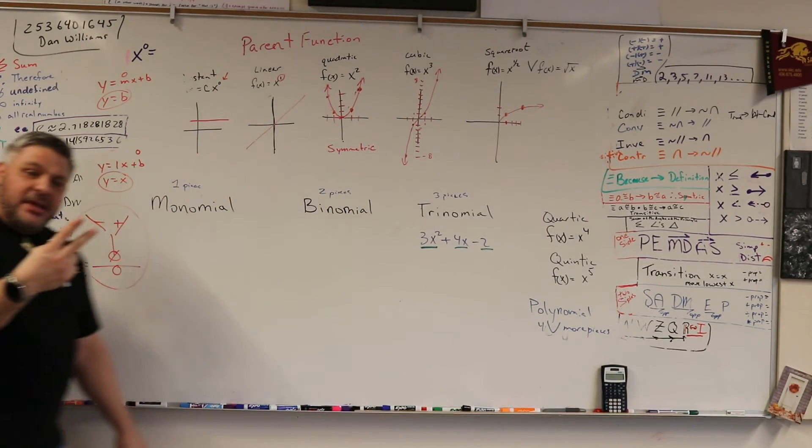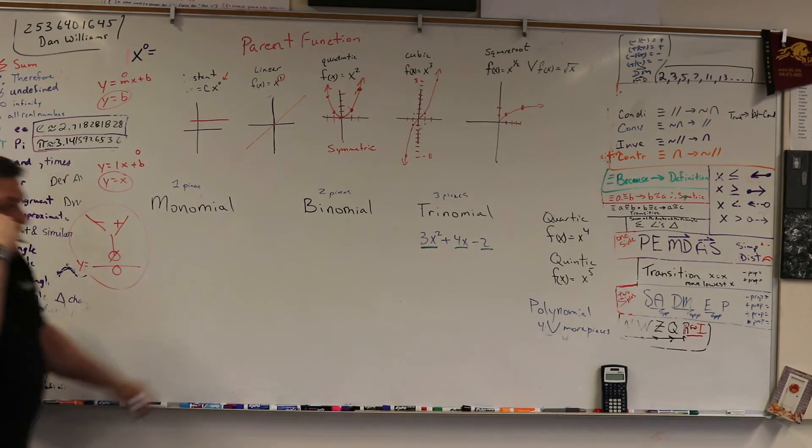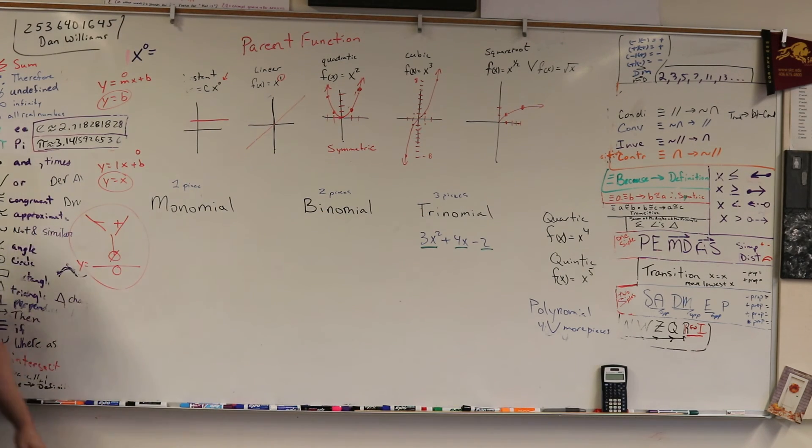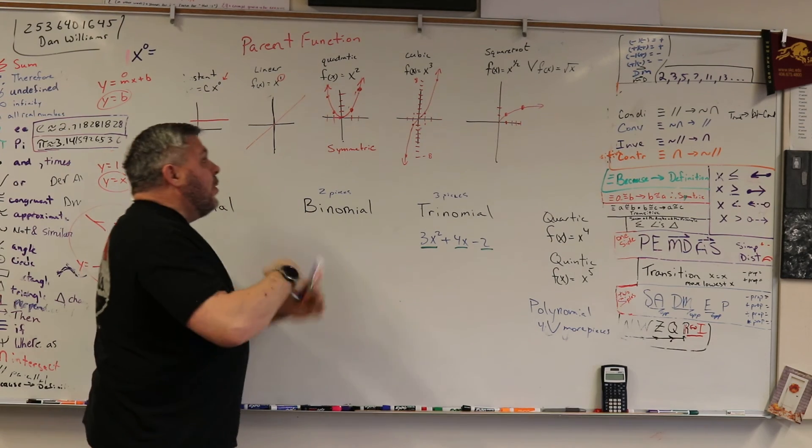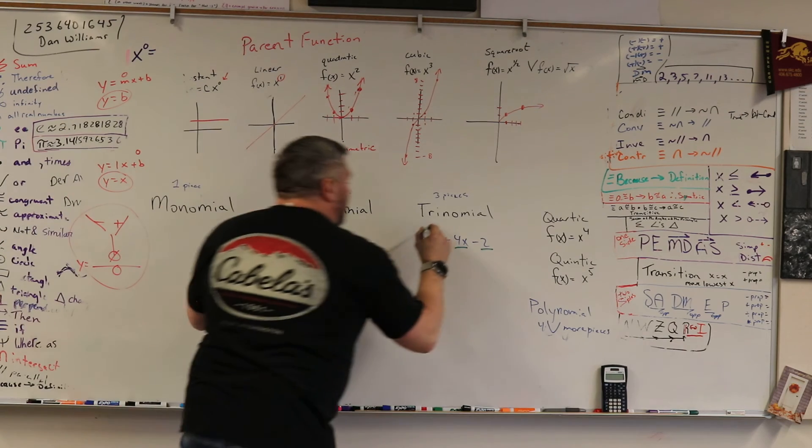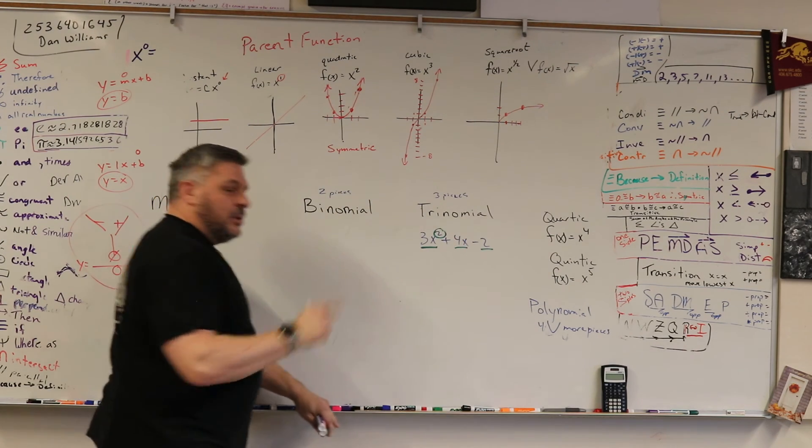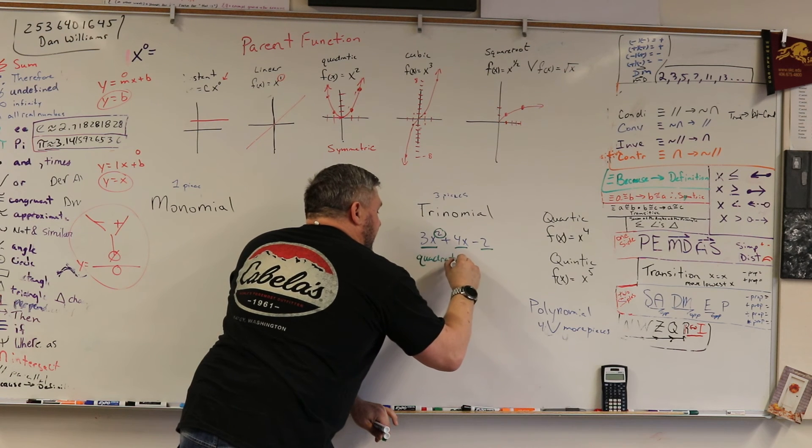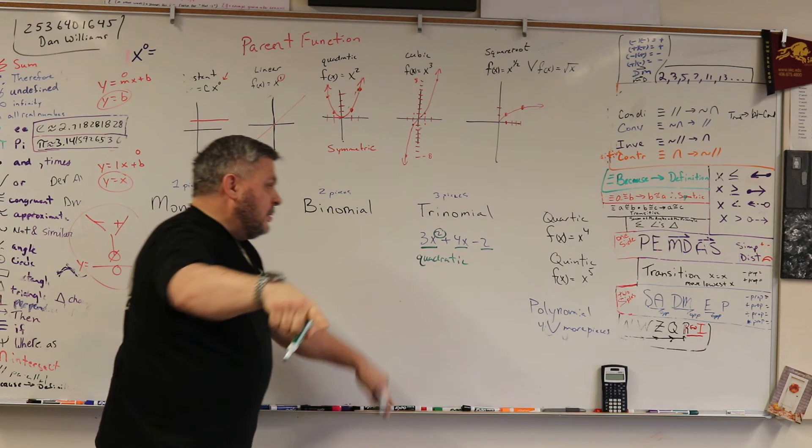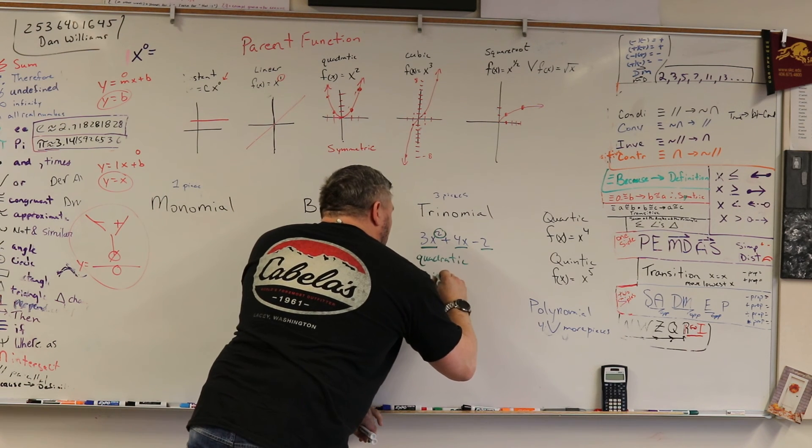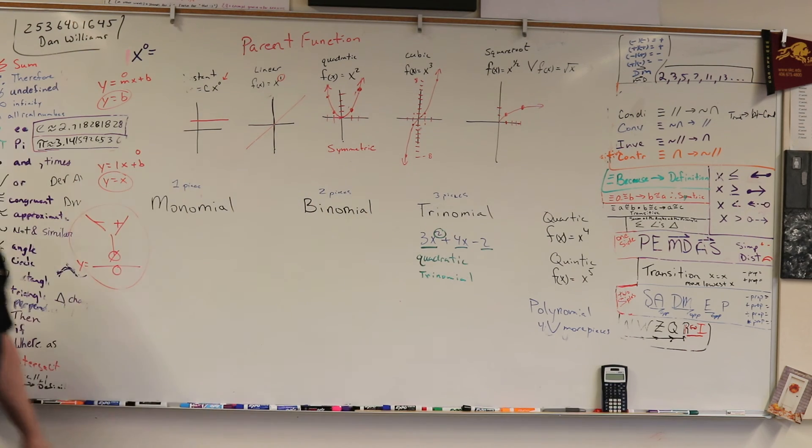All right, so we got three pieces. Is that correct? Yes. All right, everyone see that? All right, so if we have two pieces, what do you think it would look like? Now, we know that the trinomial, but what type? What's the highest degree? Two. What is that degree? Quadratic. Boom. So what do we call that? Quadratic trinomial. That's it. That's naming polynomials.